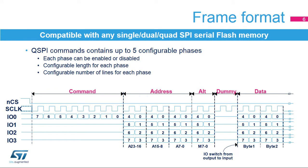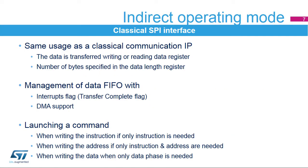The Quad SPI memory interface offers high flexibility in frame format configuration. This flexibility allows addressing of any serial flash memory. Users can enable or disable each of the five phases and configure the length of each phase, as well as the number of lines used for each phase. The Quad SPI memory interface, used in indirect operating mode, behaves like a classical SPI interface. Transferred data goes through the data register with FIFO.